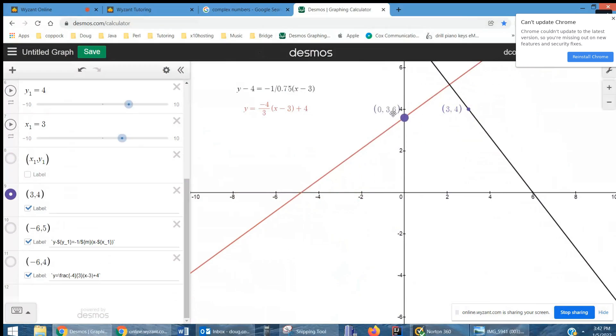Again, if I move this point, they're still perpendicular because the slopes are negative reciprocals. That's the key to remember for perpendicular lines.